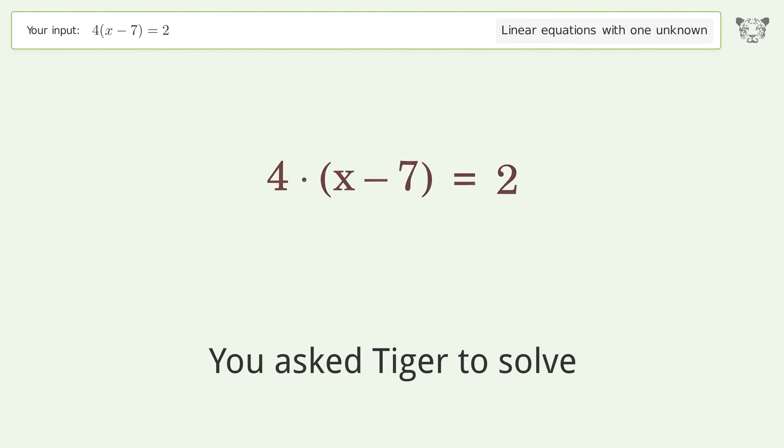You asked Tiger to solve this. This deals with linear equations with one unknown. The final result is x equals 15 over 2.